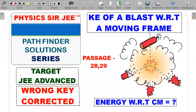Welcome back to the channel Physics Surgery. Here we are in the Pathfinder Solution Series again. This time I've brought forward a conceptual problem from the topic of methods of impulse and momentum. This is from the objective section, passage type questions 28 and 29. It's about a shell or bomb which is moving, gets blasted into three identical pieces, and there's some energy analysis done in this situation.